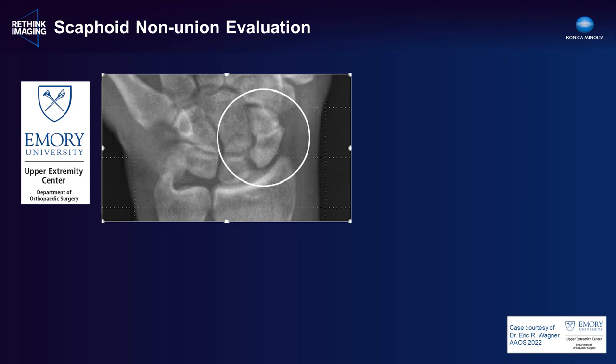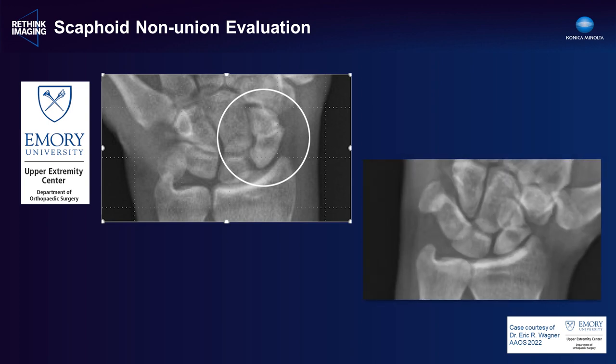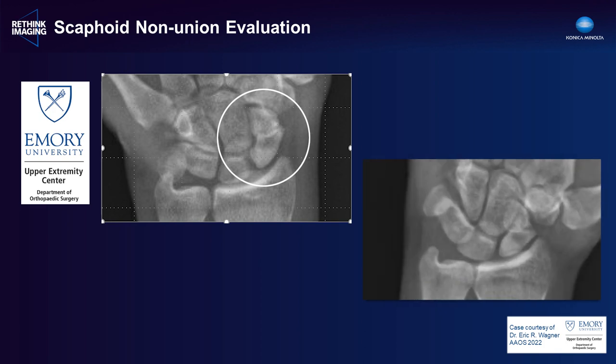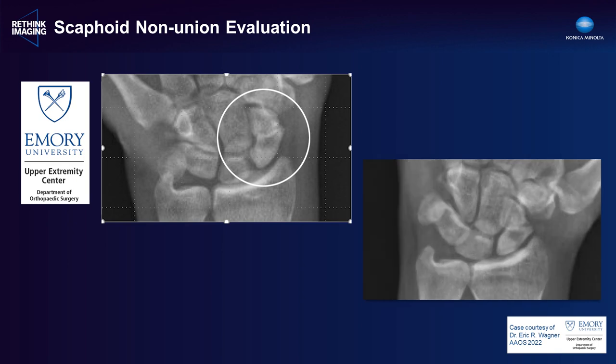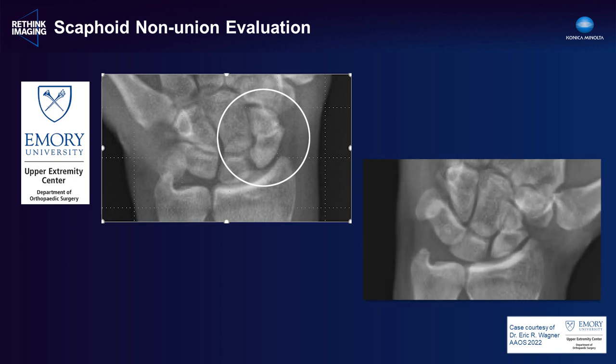In a wrist case of scaphoid nonunion, the static image presents a challenging diagnosis. The scaphoid bone is clearly fractured but it's difficult to assess if it's displaced—there's not a definitive gap between the two components and it's hard to tell if the distal pole has shifted relative to the proximal pole. However, in motion it's very easy to see that this is in fact a fully displaced fracture. DDR can therefore help with accurate, timely diagnosis and very efficient patient care.